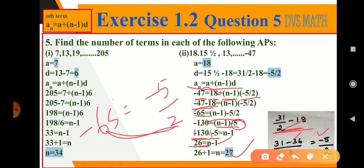Here also, if we take n value as 27 and if we find an value, we will get minus 47 as the answer.